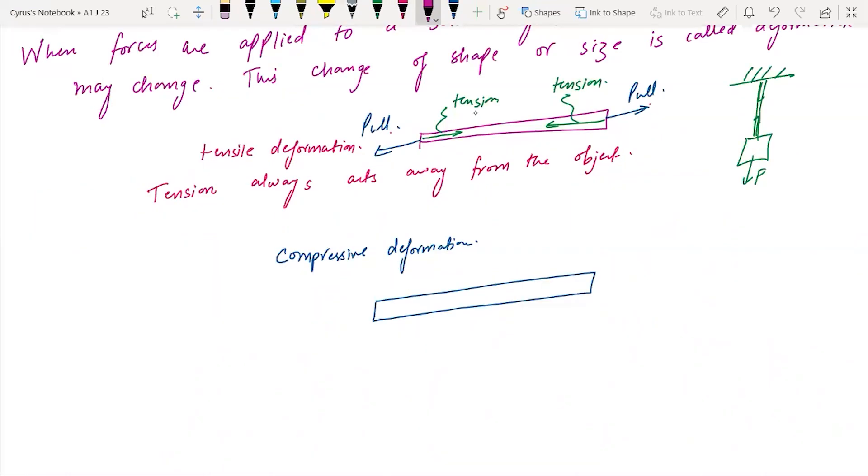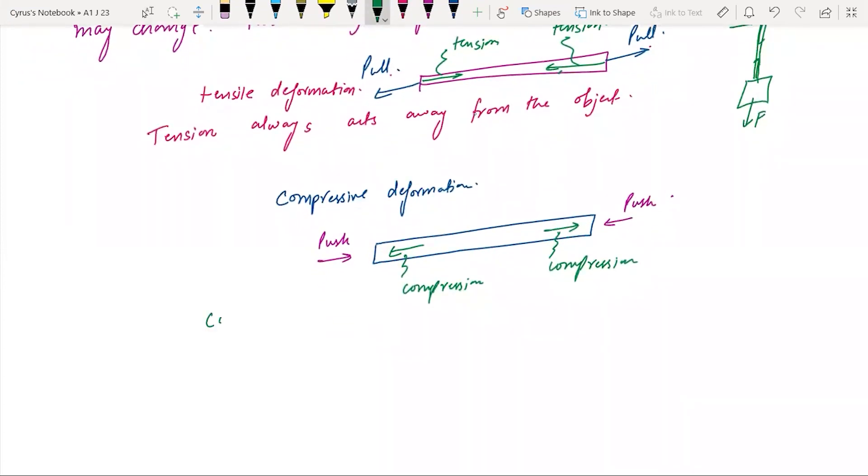I can push here, I can have a push here. This is a push and this is also a push, and what happens is that we have compression in the opposite direction. This is the compression that we have. We call this compressive deformation.